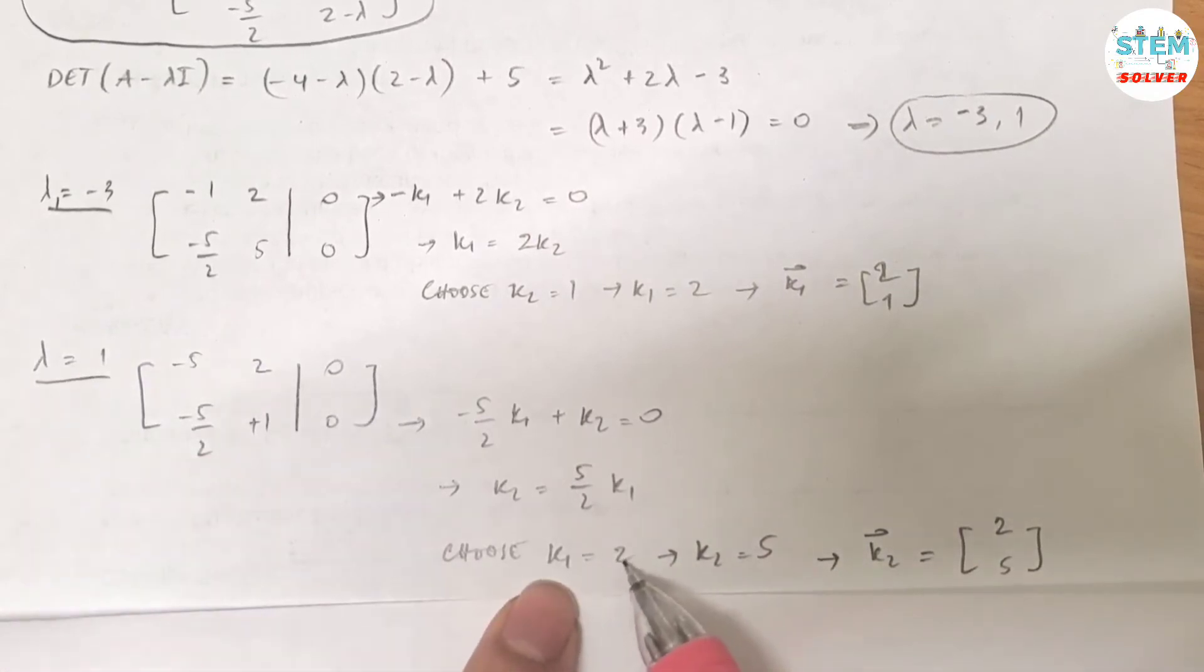The goal is because I don't like to have fractions, so that's why I let k1 equals 2. That simplifies the fraction here. You can choose whatever value for k1 or k2 and then solve for the other value. It doesn't matter. Now that gives me vector k2 equals 2, 5 for lambda equals 1.